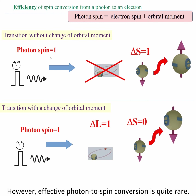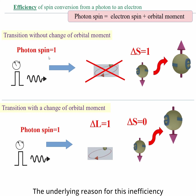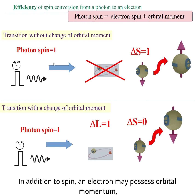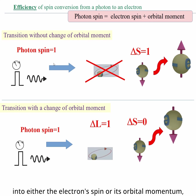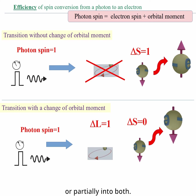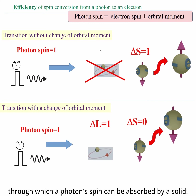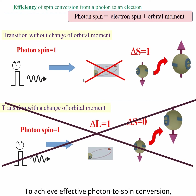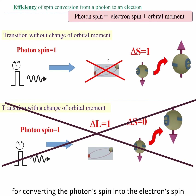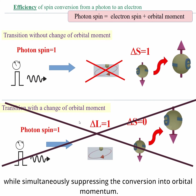However, effective photon-to-spin conversion is quite rare. The underlying reason for this inefficiency is the presence of orbital momentum. In addition to spin, an electron may possess orbital momentum, and the spin of the photon can be channeled into either the electron spin or its orbital momentum, or potentially into both. There are two distinct routes through which a photon spin can be absorbed by a solid: either into electron spin or into orbital momentum. To achieve effective photon-to-spin conversion, it is necessary to enhance the pathway for converting the photon spin into the electron spin while simultaneously suppressing the conversion into orbital momentum.